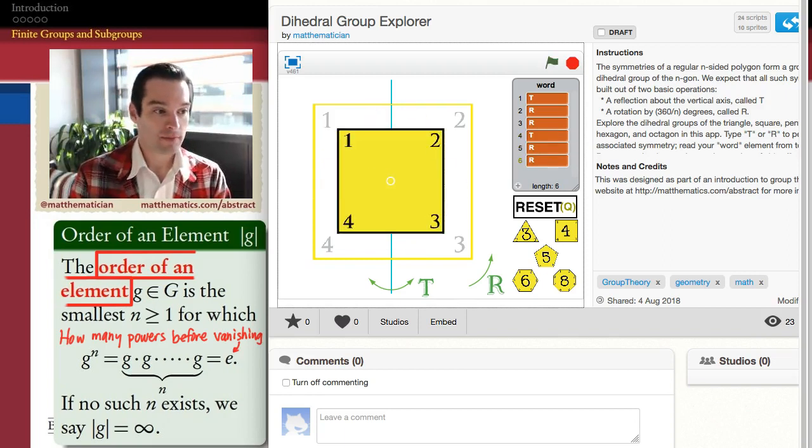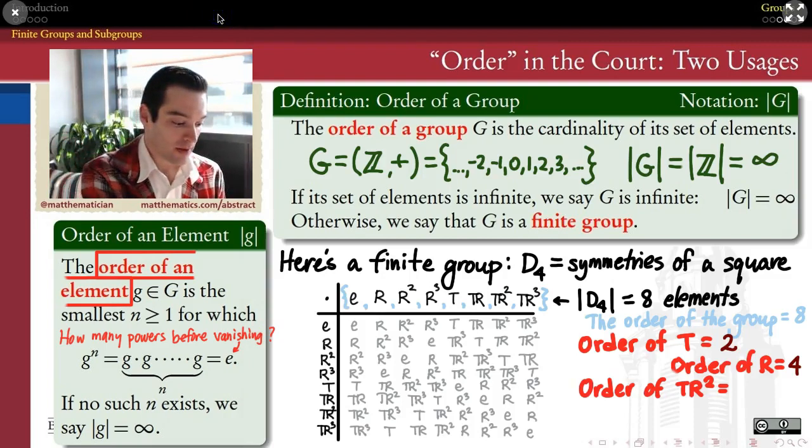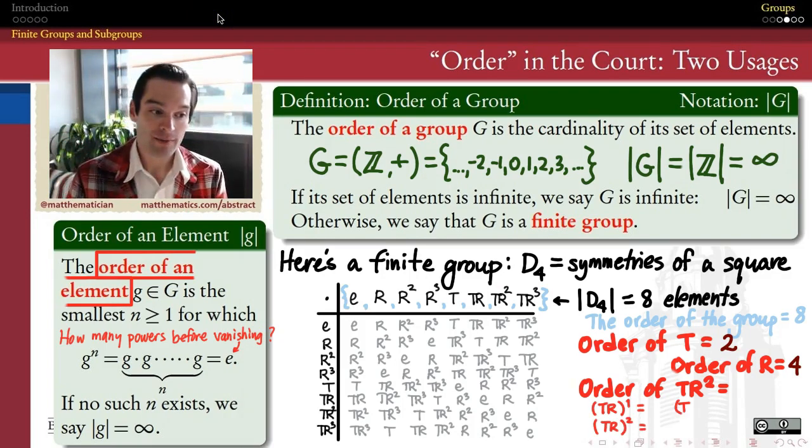And look at that. I'm back to the identity where I started. And so at this point, I don't even need to do more powers. The first power of tr² is not the identity, but the second power of tr² already is the identity. And therefore, the order of the element tr² is again 2.